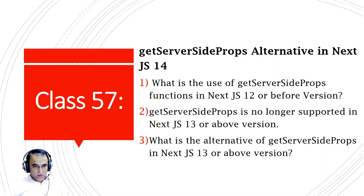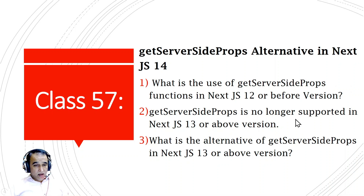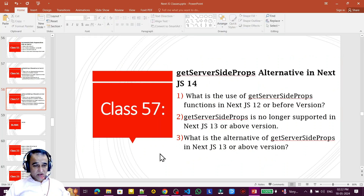In Next.js 12 and earlier versions, getServerSideProps was used. But from version 13 — which was the beta version — this function is not available in the app router. Inside the app folder you cannot create this function, but you can still create it under the pages folder if you are using that. Otherwise, you would not be able to use it. The alternative to getServerSideProps is to use the fetch function with some extra parameters, which I am going to explain here.